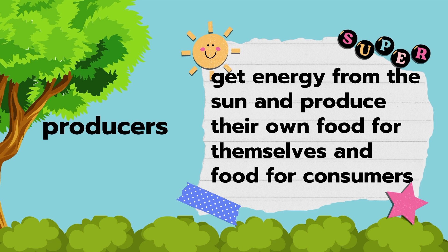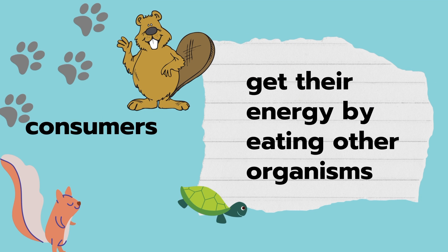Producers get energy from the sun and produce their own food for themselves and food for other consumers. That means producers are plants, because plants are the only organism capable of making its own food energy.